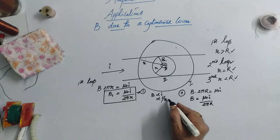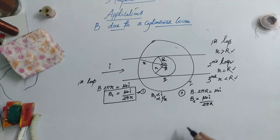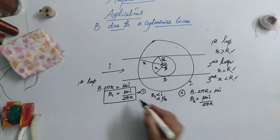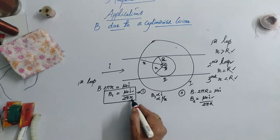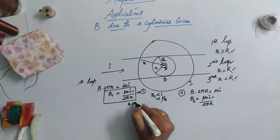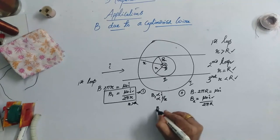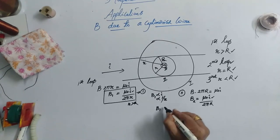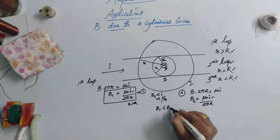If you observe this B1, now let us observe the B2. Mu 0 I is same, numerator is same in both the two cases, but in the denominator R is greater than R here. Therefore, B1 is lesser than B2.